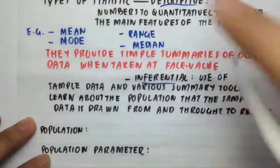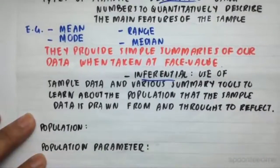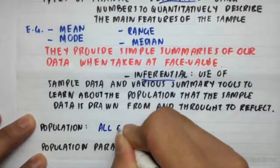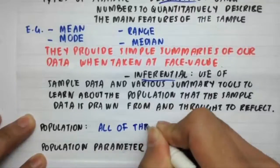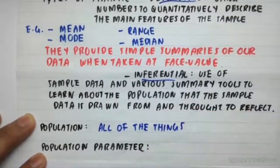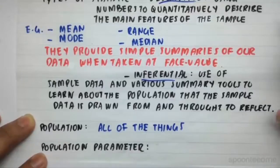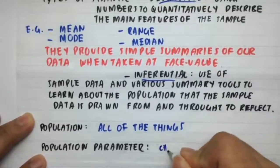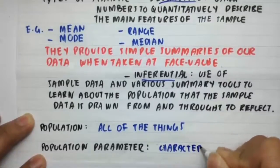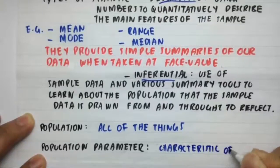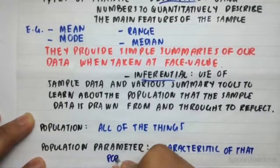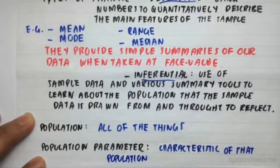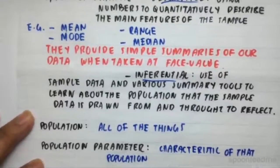So if we remember, a definition of a population is pretty much all of the sample of the things in a certain class of what we want to know about it. So for example, if it was about people, the population would be everyone, so all human beings. And then a parameter, or population parameter, is just a characteristic of that population. So for example, a population parameter might be the age of everyone or the age of people.